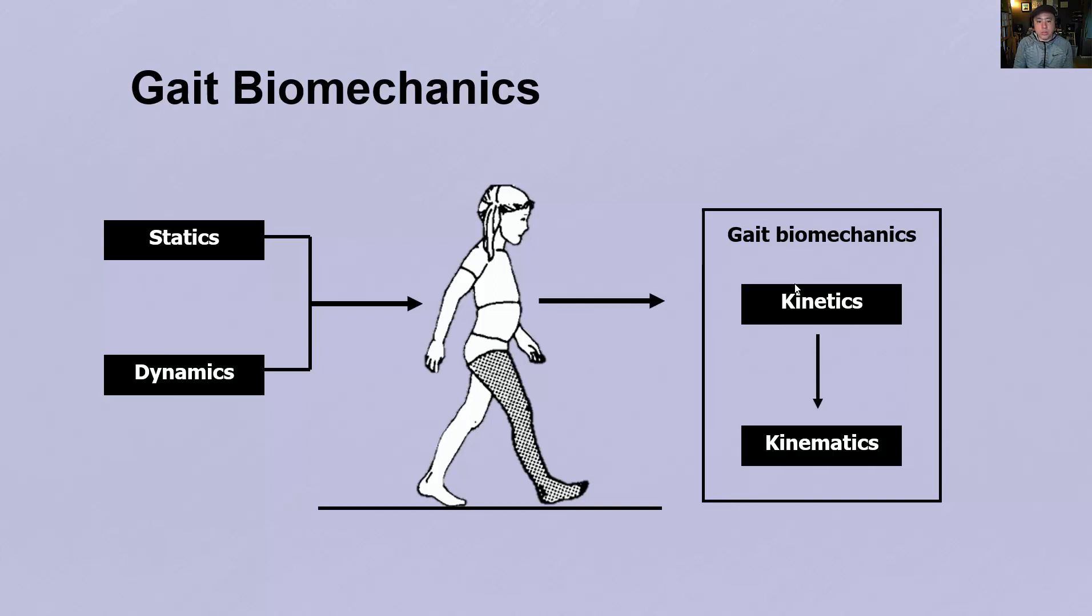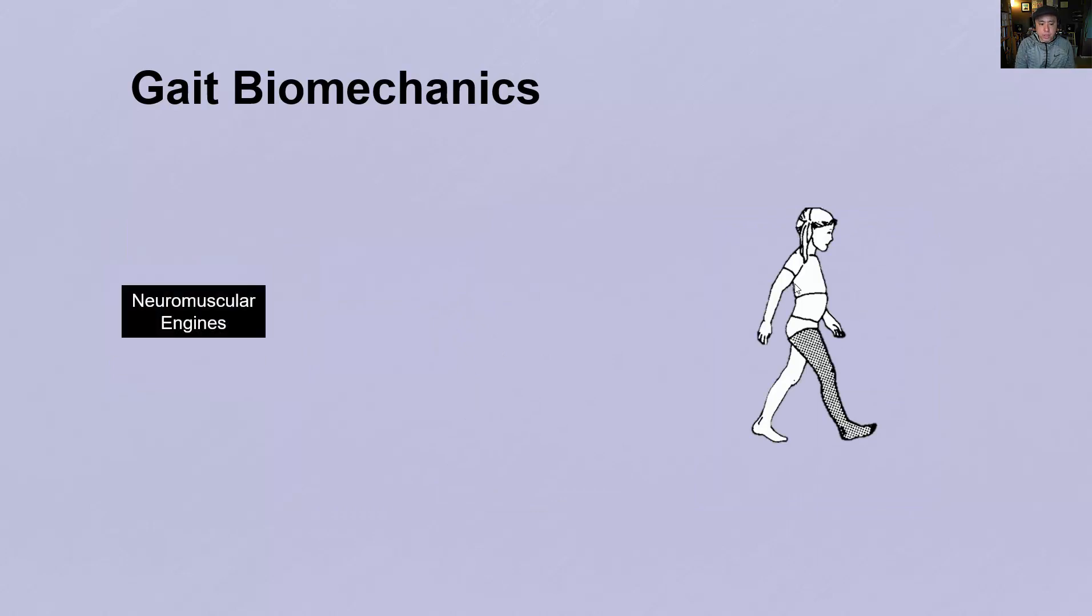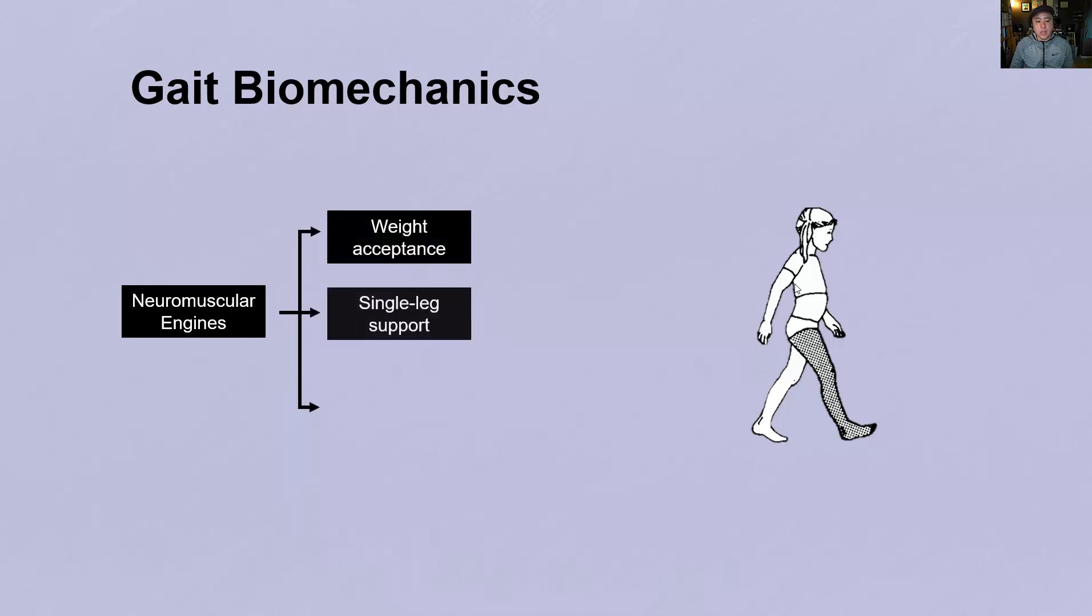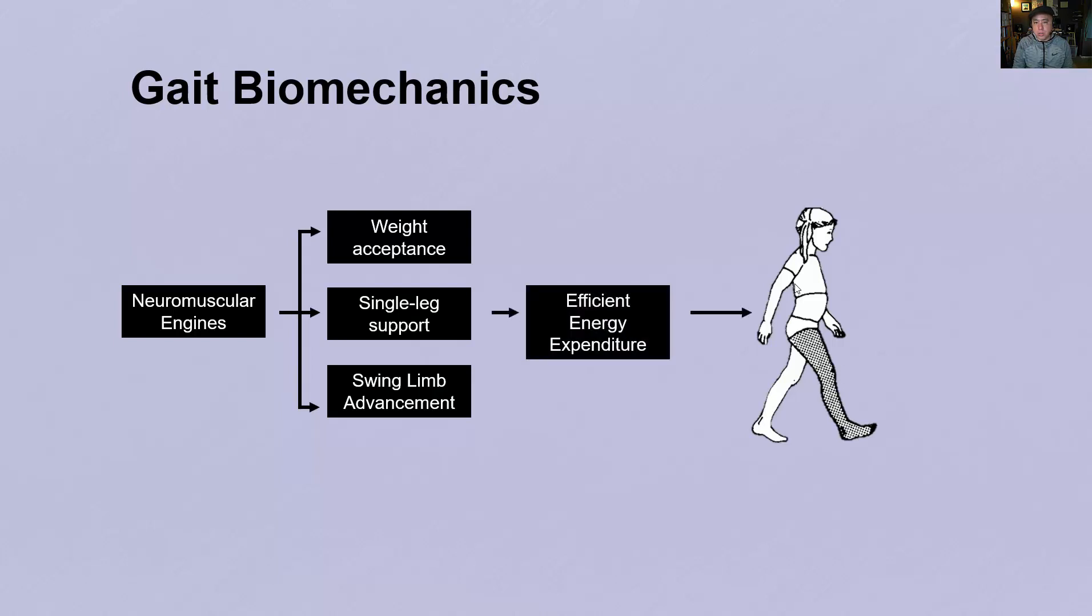So if we look at those three functional tasks, we know that in addition to gravity, our neuromuscular engines essentially facilitate weight acceptance, single leg support, as well as advancing the limb forward. And it does so in a highly efficient manner. You already know this. Many of you can walk for miles and miles on end without getting tired, without even breaking a sweat, assuming you're walking on flat ground. And it's because walking is highly efficient. It's highly efficient because it's typically modeled as an inverted pendulum.